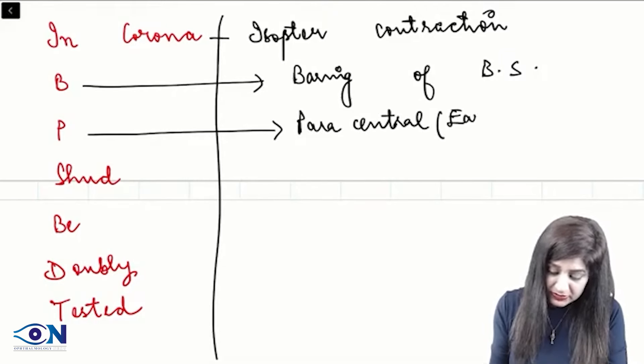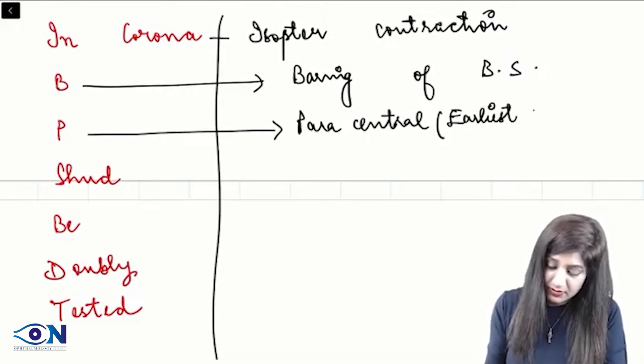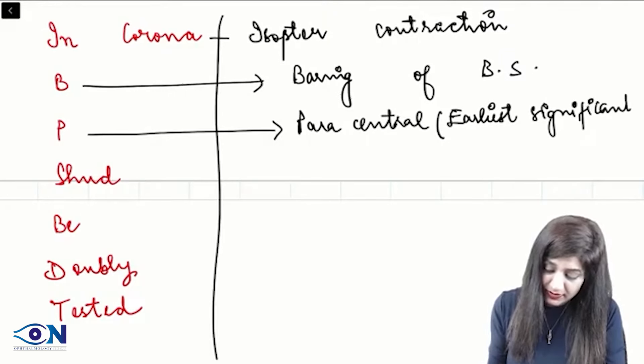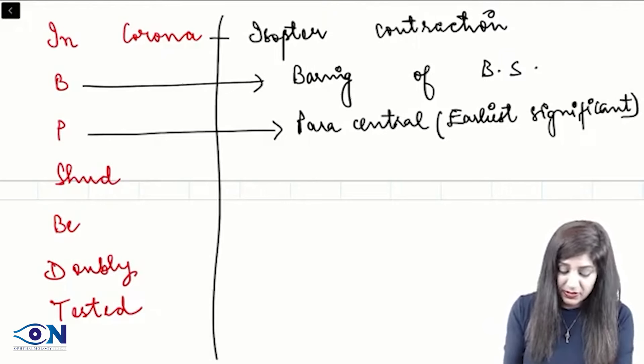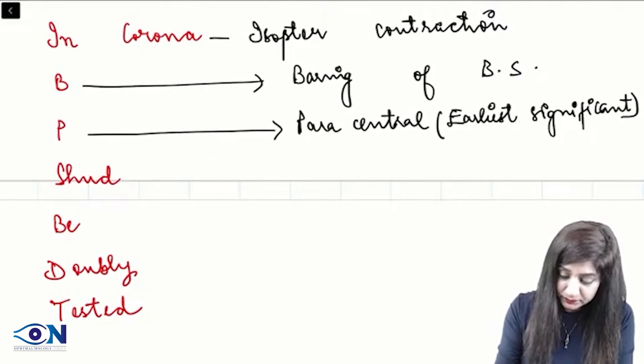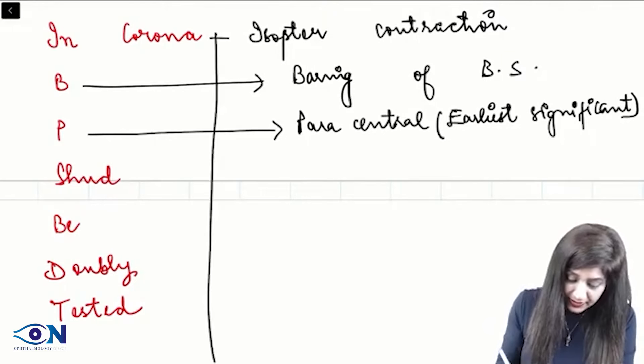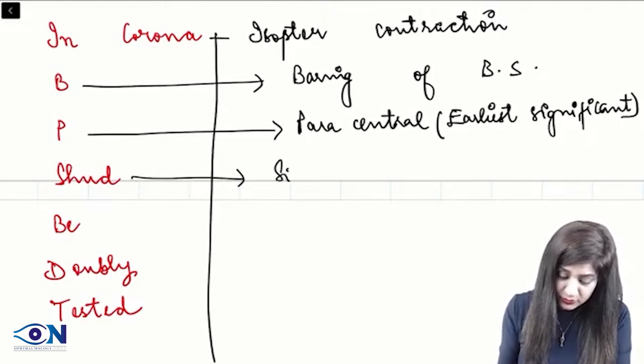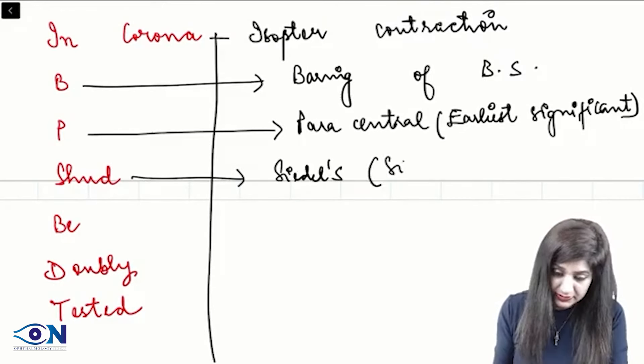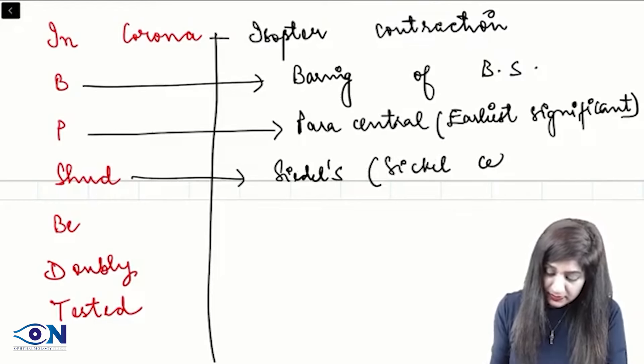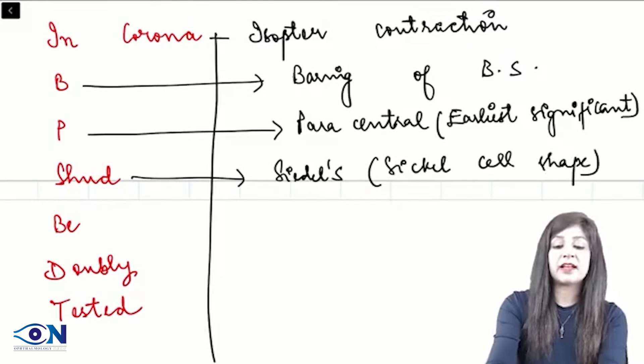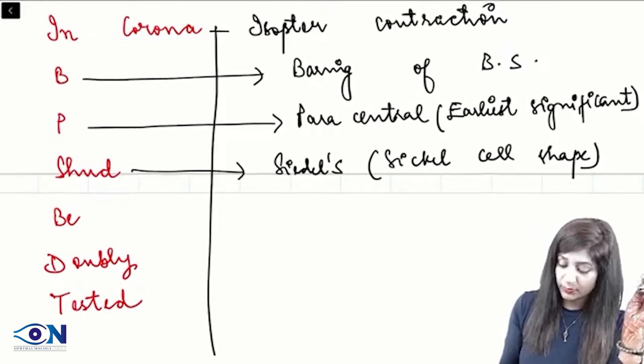So, this is actually the earliest significant scotoma that we are getting. Then we have the next one, the sickle scotoma. This sickle scotoma is the sickle cell shape. It is the sickle cell shape scotoma. Whenever they are asking you the sickle cell shape scotoma, it is this.